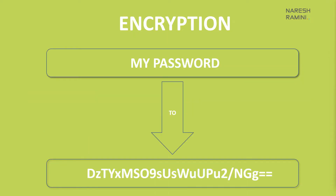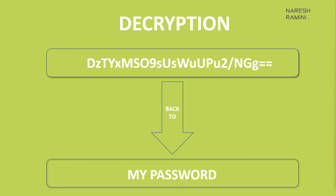Well, what is encryption? The process of rendering readable information to an unreadable state or format is encryption. And what is decryption? The process of rendering the information back to a readable state is called decryption.